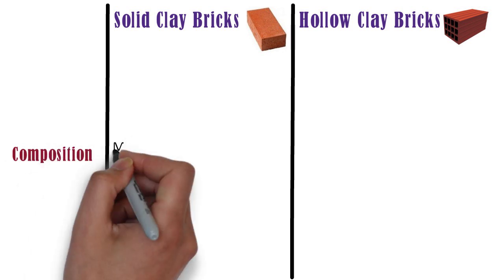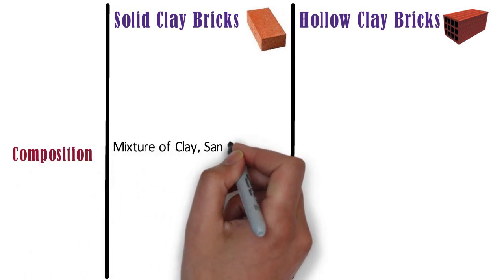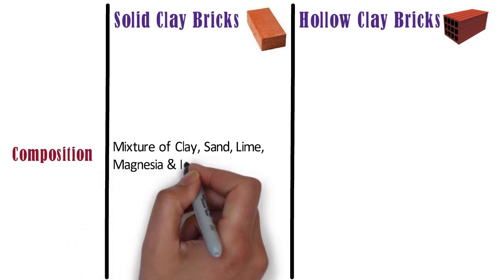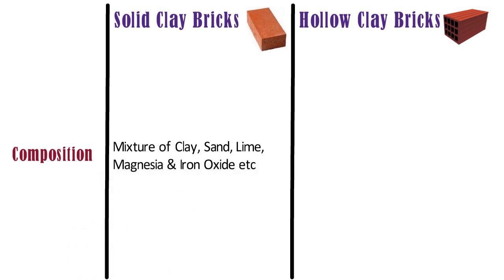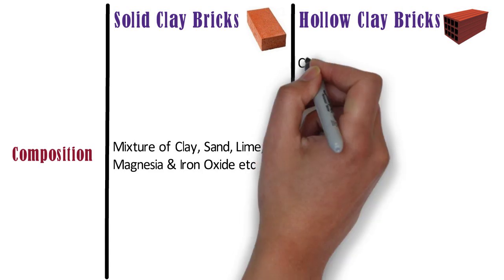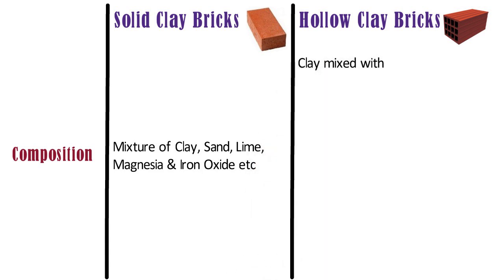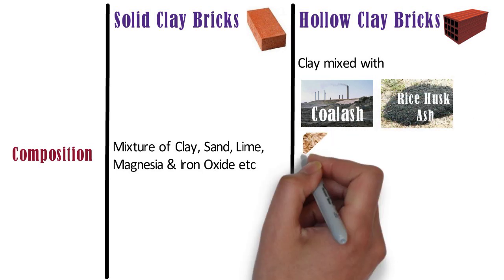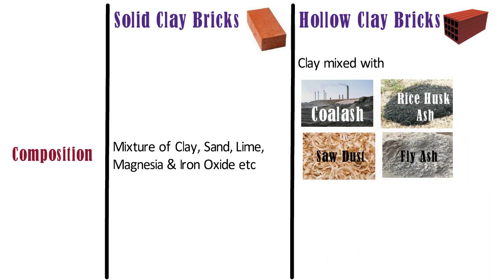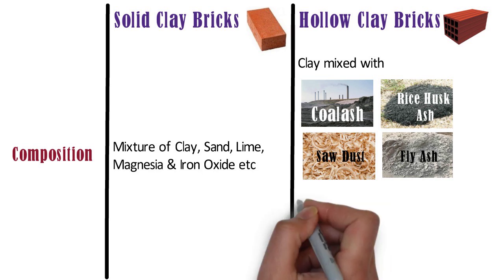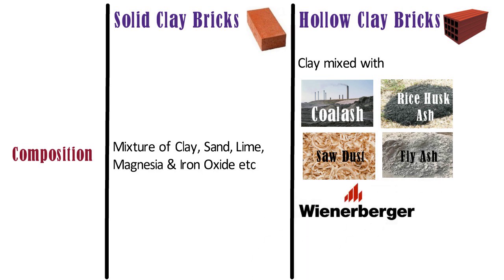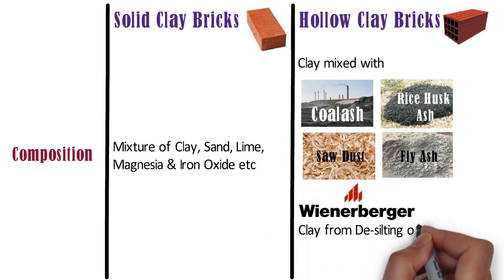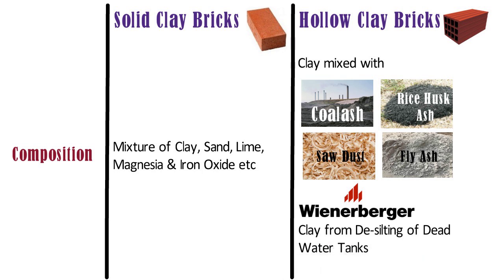Clay bricks are made by a mixture of clay, sand, lime, magnesia, and iron oxide, etc. Whereas, hollow clay bricks are made up of clay mixed with natural additives like coal ash, rice husk ash, sawdust, and fly ash. Please note, companies like Weiner Berger use the clay from desilting of dead water tanks. These bricks are also known as porotherm bricks.